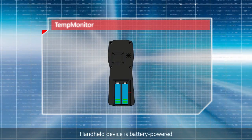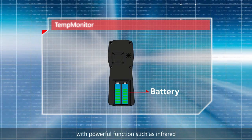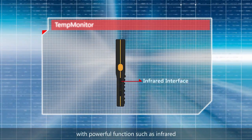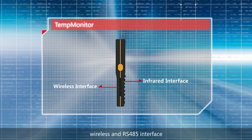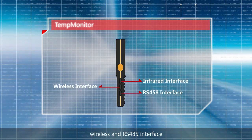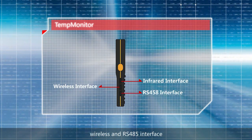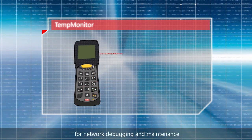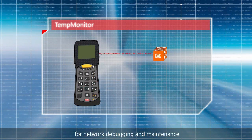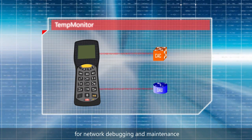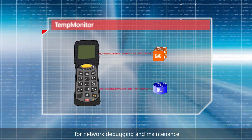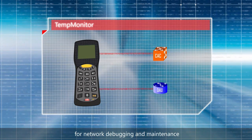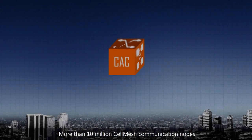The hand-held device is battery-powered with powerful functions such as infrared, wireless, and RS-485 interfaces. It is easy to carry and can communicate with CAC and DAU for network debugging and maintenance.